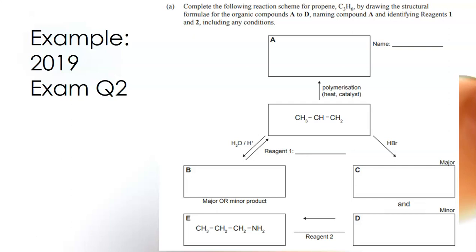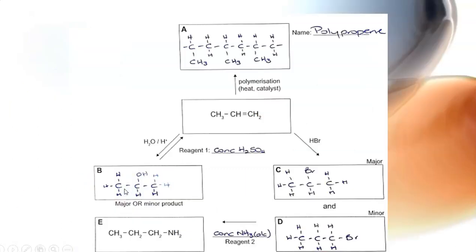The last question part is asking you for reagent two so to get from a haloalkane to an amine, again this is one you just have to learn, it's got to be concentrated ammonia and alcohol and so you should find that your answer will look something like this.